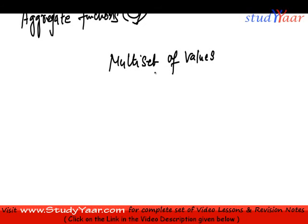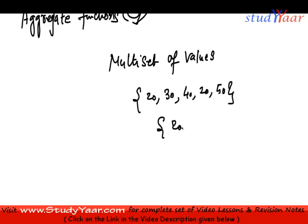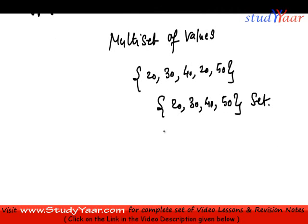So what do we mean by multi-set of values? Remember, a relation is a set. If we have values like 20, 30, 40, 20, and 50, then the result of a relation would only display 20, 30, 40, and 50 — that is a set. But if we have multi-sets, then both occurrences of 20 would be retained.